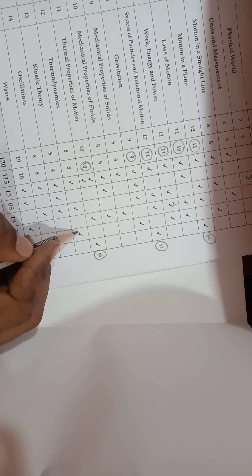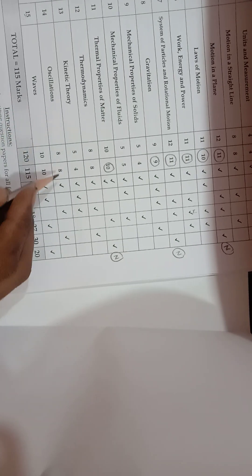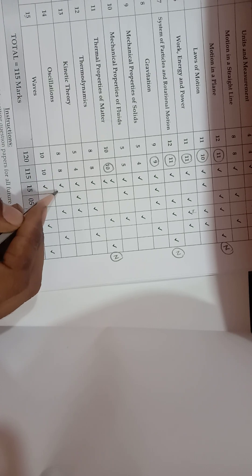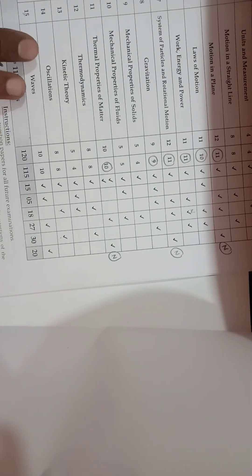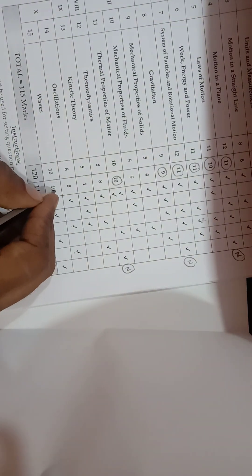Chapter 13, Kinetic Theory of Gases, has 4 marks allotted — one MCQ, one Fill in the Blank, and one 2-mark question. There are no numericals in this chapter. Chapter 14, Oscillations, has 8 marks allotted — one 1-mark MCQ, one 2-mark question, and one 5-mark question.